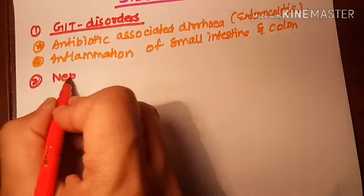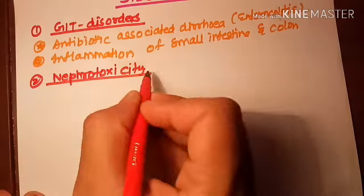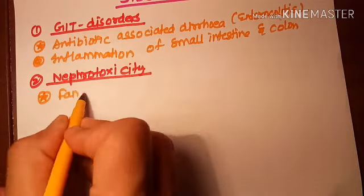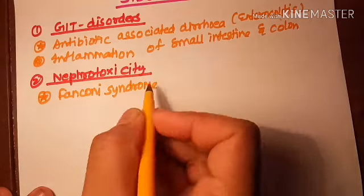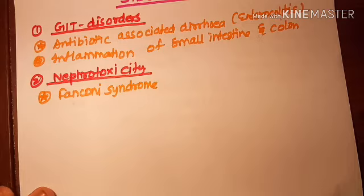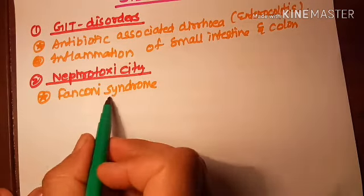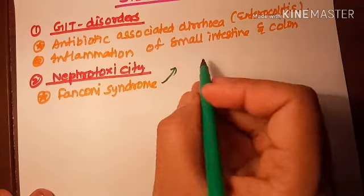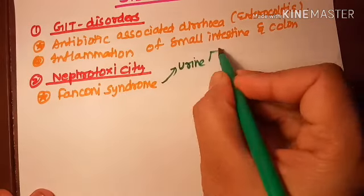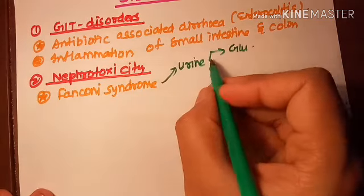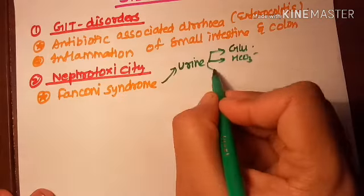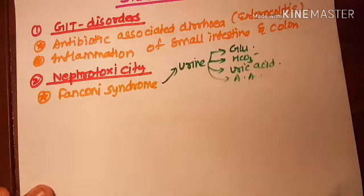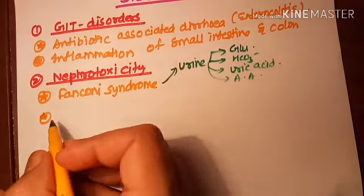Fanconi syndrome is a kidney disorder that causes excess excretion of glucose, bicarbonate, uric acid, and amino acids in the urine. Tetracyclines are contraindicated in children and should not be used with milk because it produces complexation.